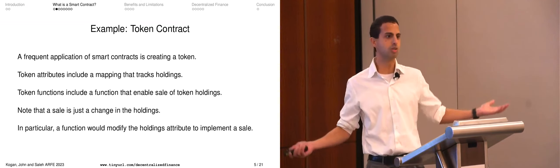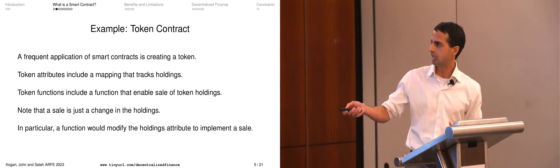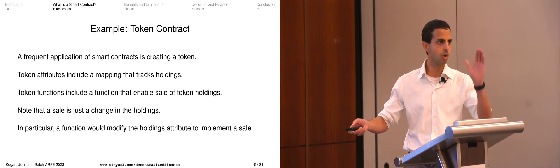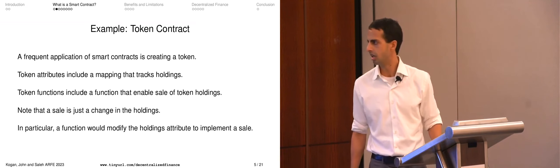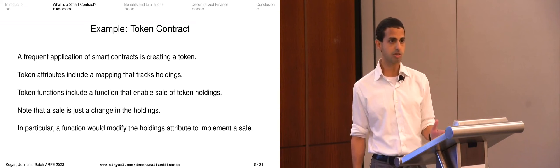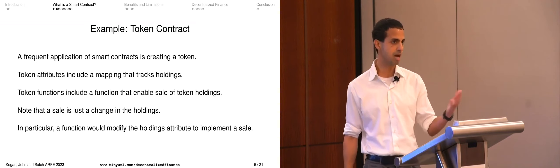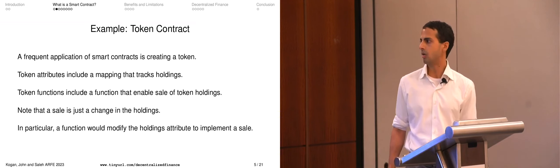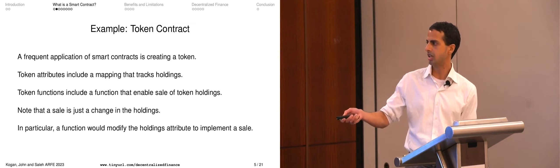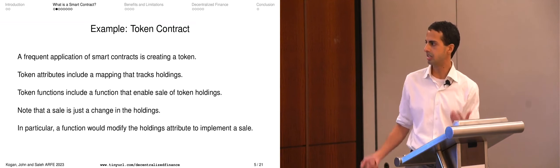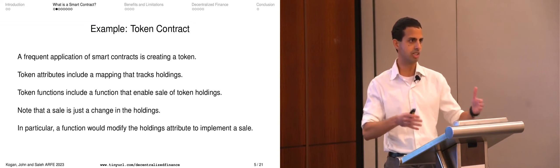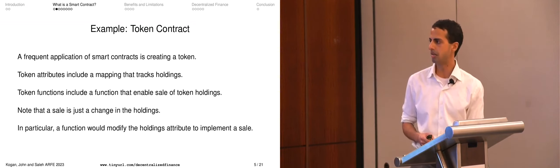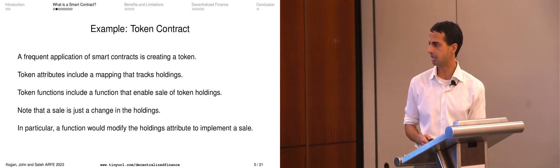The attributes have to include something that stores the holdings of the token at a point in time — a mapping that tracks the holdings. Of course holdings are not static; you want to be able to move your token, buy or sell things. So you need a function that allows transitions in the holdings — a function that enables sales, where a sale just means changing the holding: drawing down my balance and incrementing somebody else's balance.